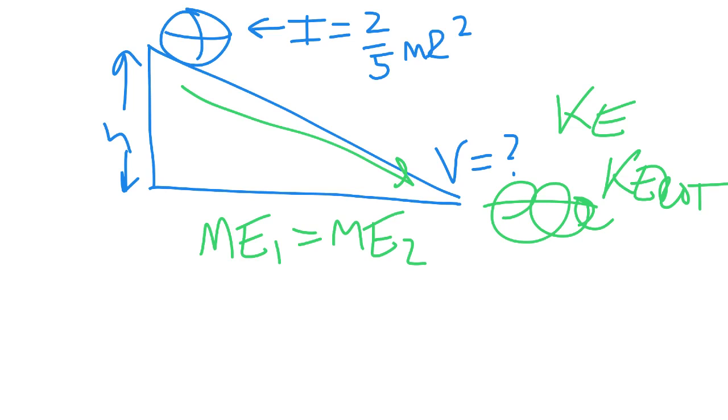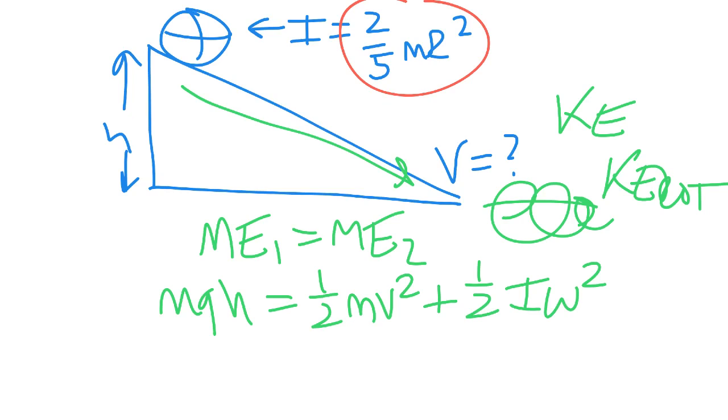At the top, it has MGH. At the bottom, because it's moving, it has one-half mV squared, and because it's rolling, it has one-half I omega squared. Then what we need to do is take this I and place it in there.